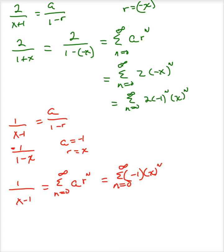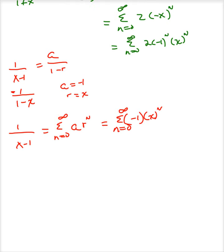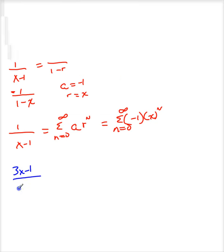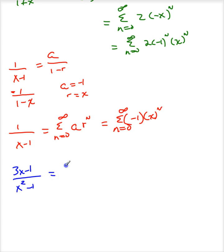So this is going to be the sum as n goes from 0 to infinity of negative 1 times x to the n. All right, so what does that tell me? I've got these two power series and I'm simply going to add them. So 3x minus 1 divided by x squared minus 1 is the sum as n goes from 0 to infinity of 2 times negative 1 to the n, x to the n, plus negative 1 times x to the n.